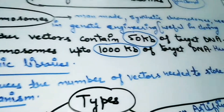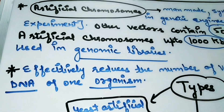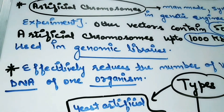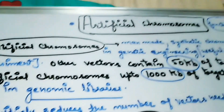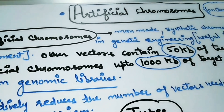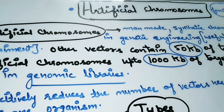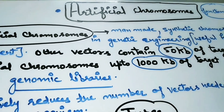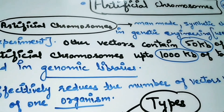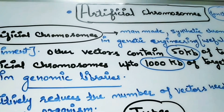Artificial chromosomes effectively reduce the number of vectors used to store the genomic DNA of one organism. If we use normal vectors in the genomic library, many more vectors are needed. But because artificial chromosomes have a capacity of 1000 kb of targeted DNA, we can use just one artificial chromosome as a vector to store the genomic library of one organism, without needing many different vectors.